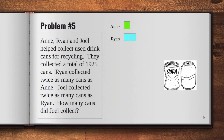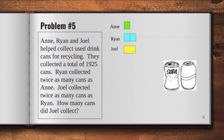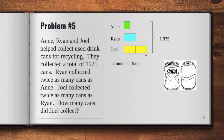And looking further in our clue, we can find out that Ryan collected twice as many cans as Anne. So we can draw two units. And lastly, Joel collected twice as many cans as Ryan. So we can draw twice of that. And we can divide our units like this to get equal units. In the problem, it was also mentioned that all of them collected a total of 1,925 cans. So we can represent that in our model. We are going to look for Joel's cans. Now, we know that there are seven equal units in all, and it's equivalent to 1,925. To get one unit, we just have to divide it by seven, which is equal to 275.